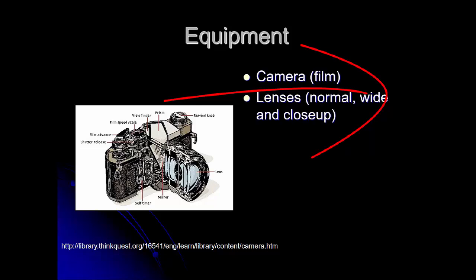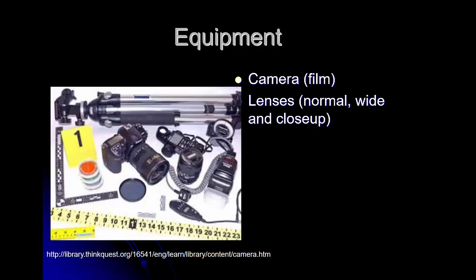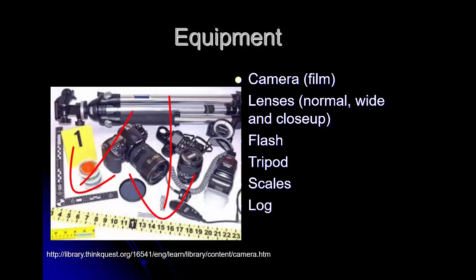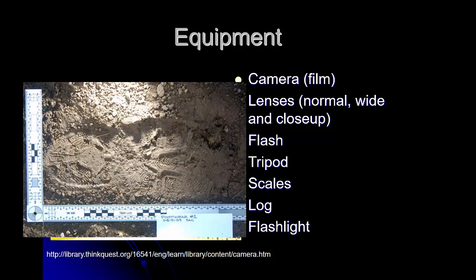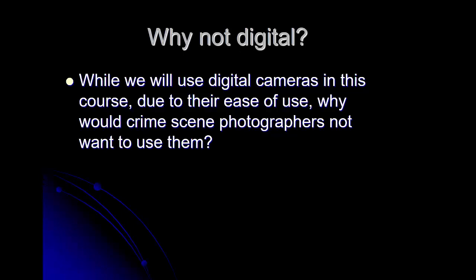In terms of equipment, a forensic photographer will need a camera. We prefer film, and we'll talk about that in just a minute. They'll also need some lenses — usually a normal 35-millimeter lens, a wide-angle lens, and a macro lens for close-up images — as well as a flash and a tripod. Tripods are great because they help take a very steady photo. You'll also need a scale, a record log, and it's useful to have a flashlight, because sometimes you need to apply a little extra light from a specific direction before taking an image.